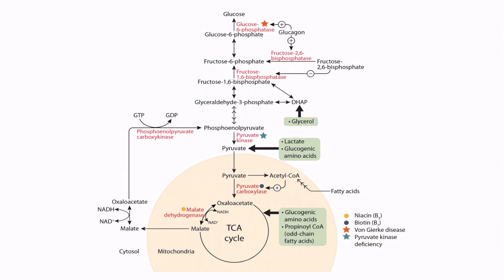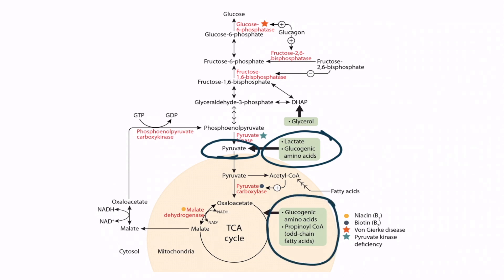Also notice how all of the metabolites shown in the green boxes enter the pathway. We discuss the pathway starting from pyruvate, and we can see that lactate and glucogenic amino acids, such as alanine, enter the pathway here. However, some other glucogenic amino acids, as well as propionyl-CoA, enter the pathway at the TCA cycle. Glycerol is particularly unique because it enters the pathway right here, which bypasses many of the earlier steps.